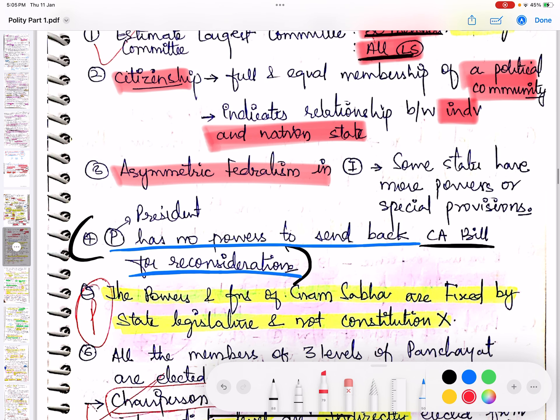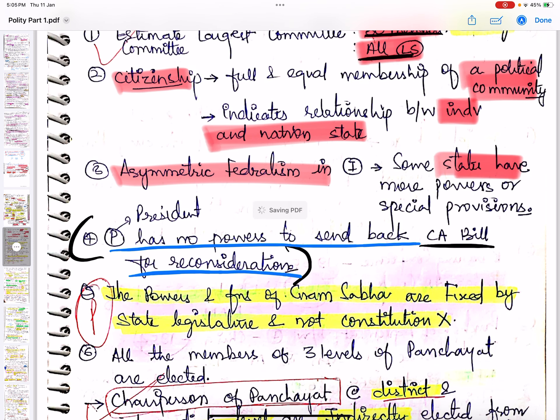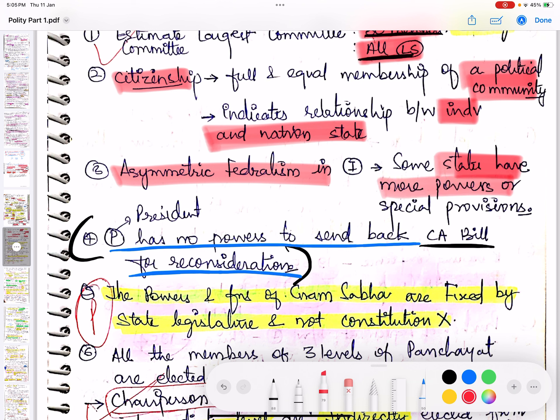Asymmetrical Federalism - some states have more power than others, and as a result, special provisions are made for those states. So that is asymmetrical federalism where power is divided asymmetrically.